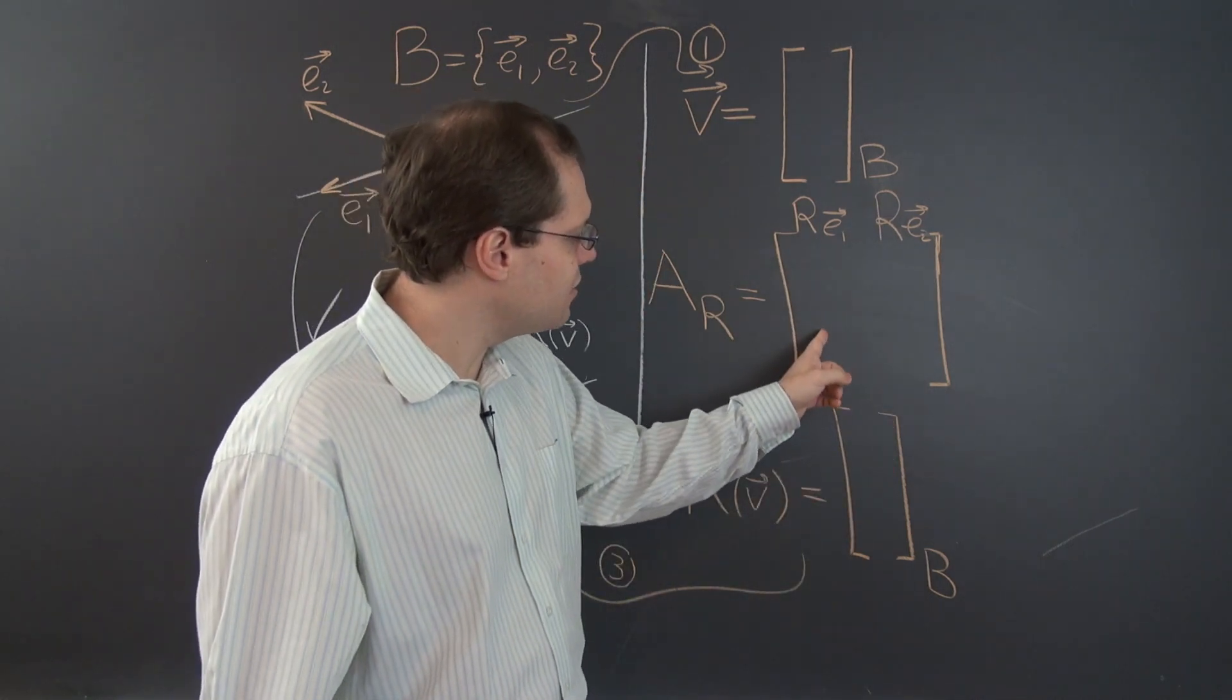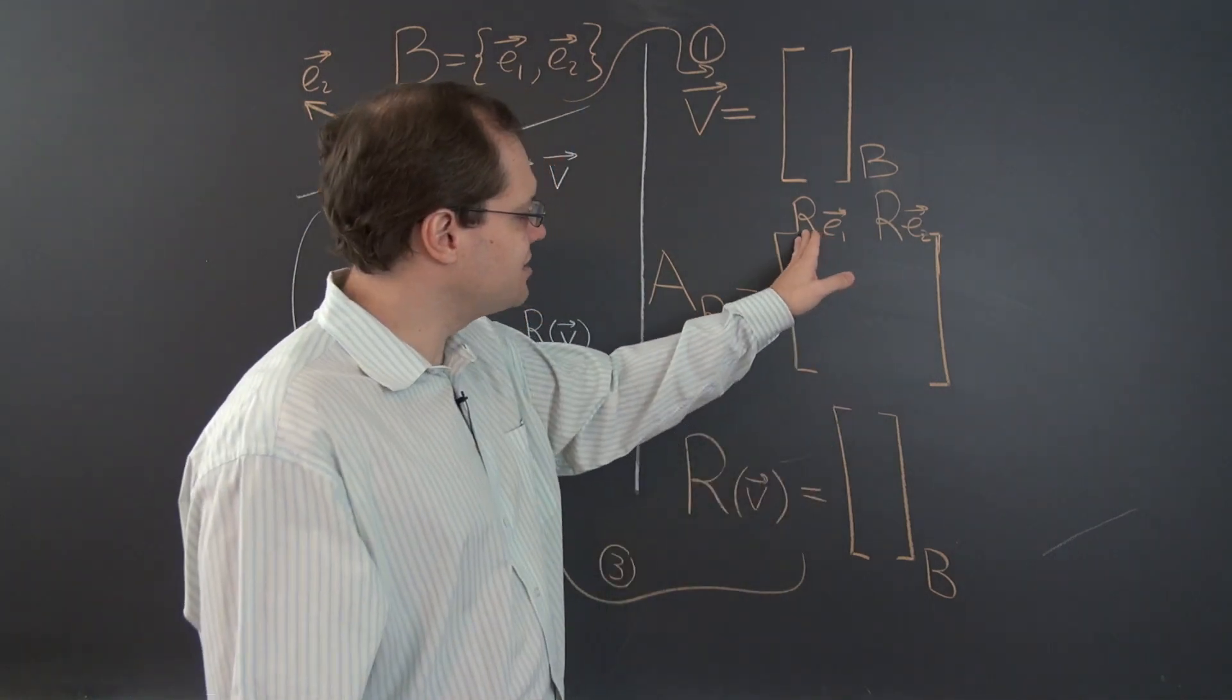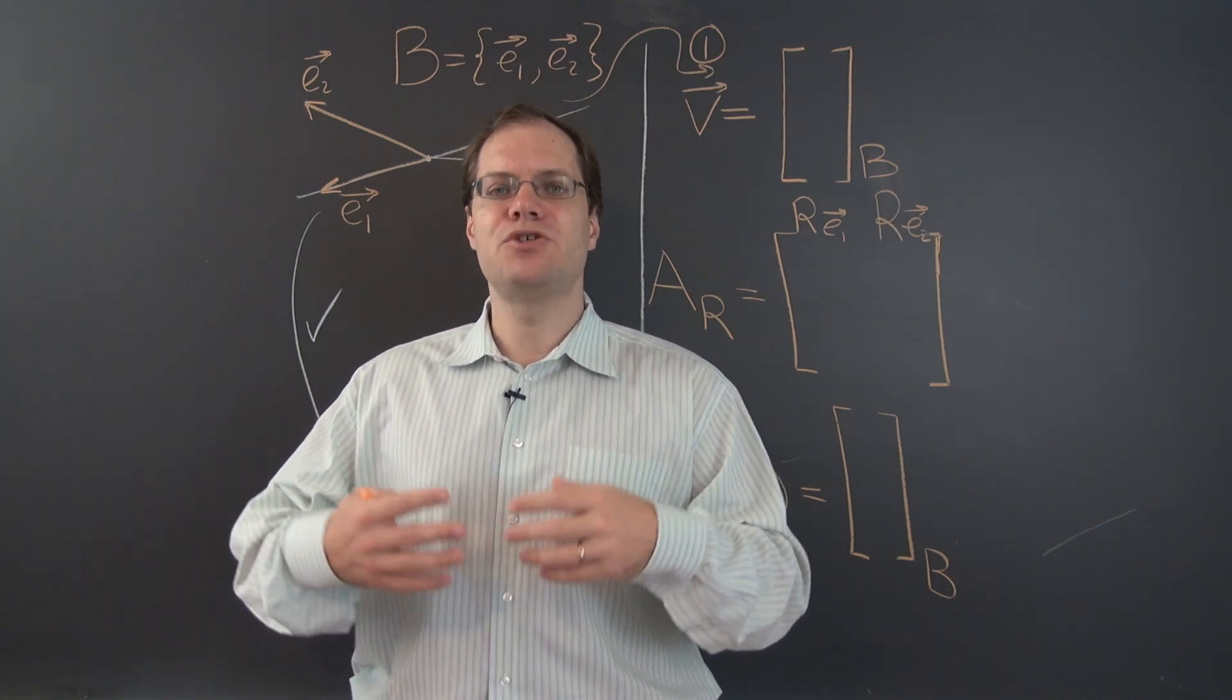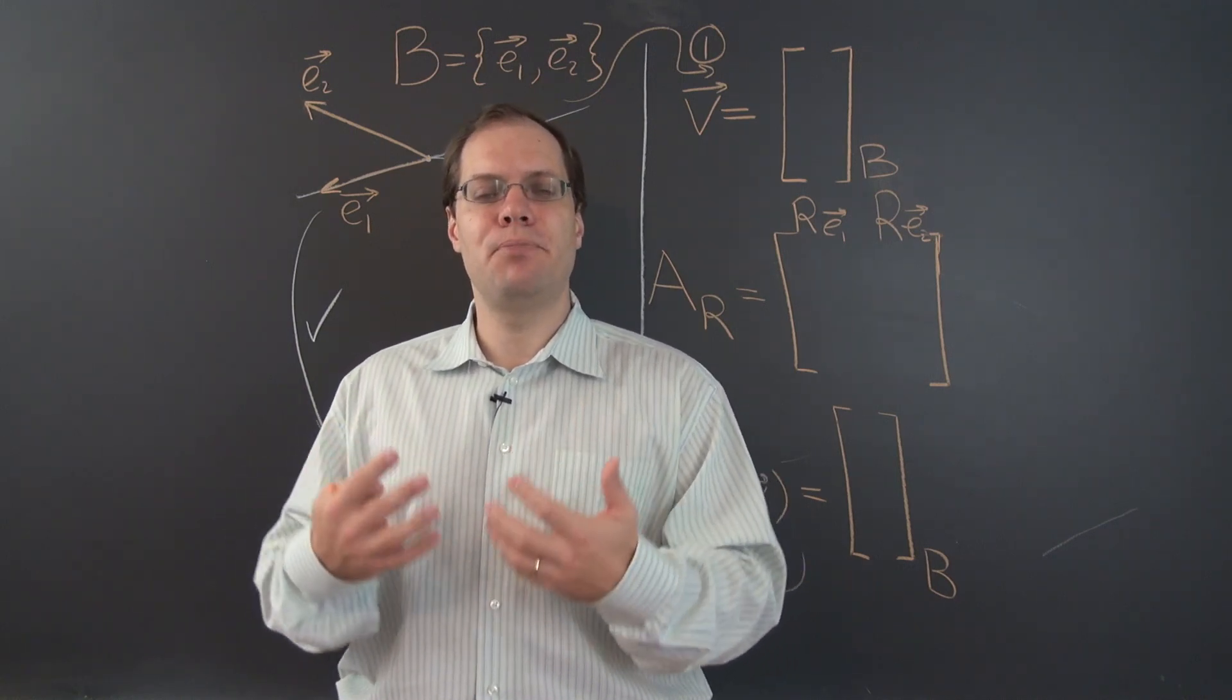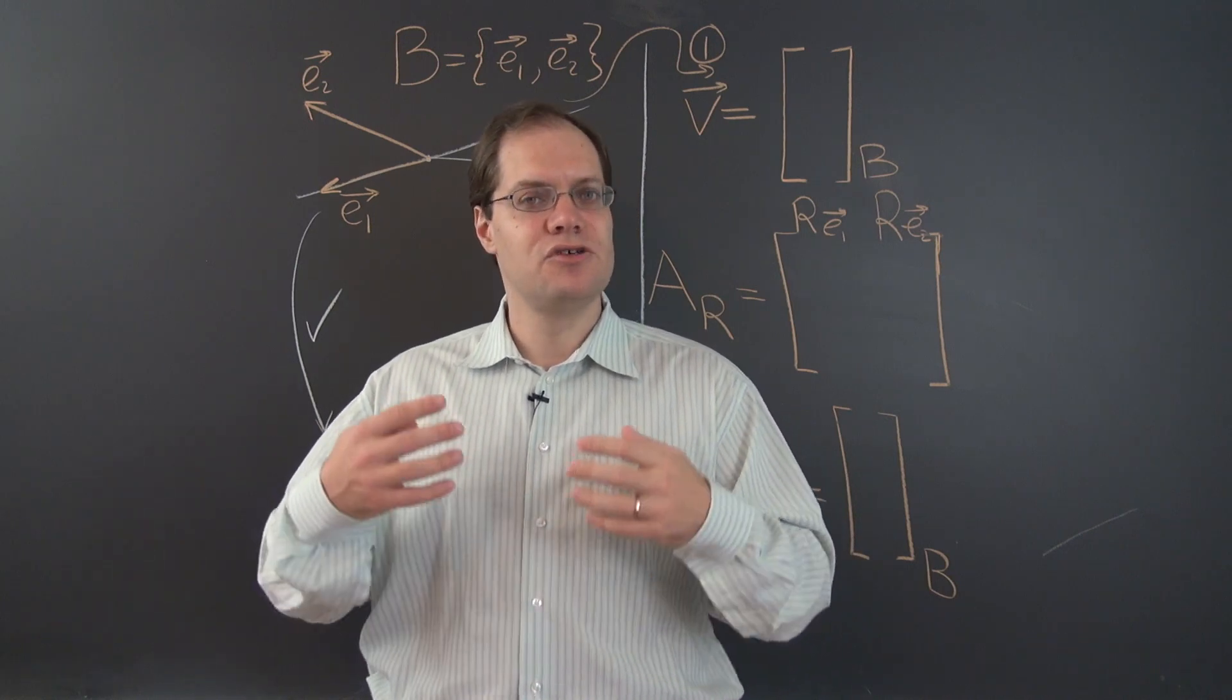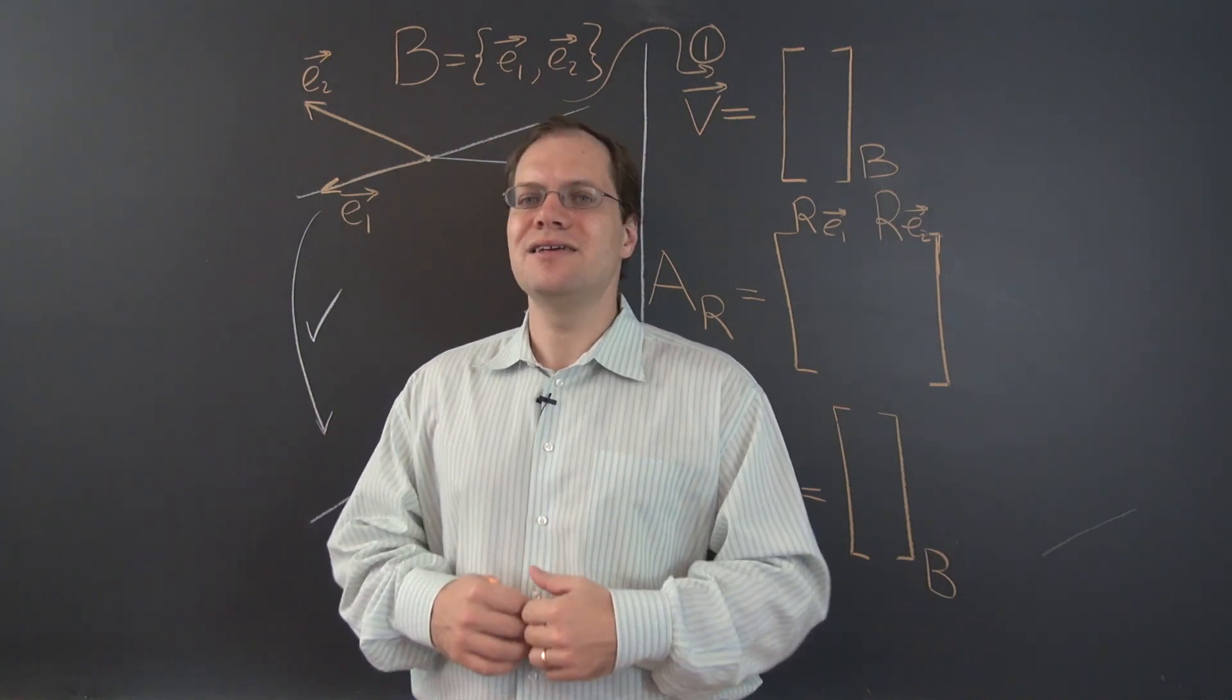Because what goes in here are the components of R of E1, of the transformed image of E1. So this says reflection, but of course it applies to any transformation. With respect to what? With respect to the same basis. So the algorithm is transform each of the basis elements and decompose the result with respect to the same basis. And that's the numbers that go into the corresponding column of the matrix. So do you see how the algorithm has nothing to do with reflections and has nothing to do with our particular choice of vectors? It's completely general.